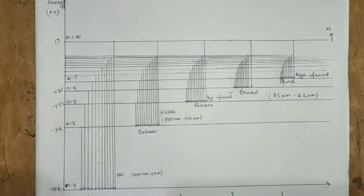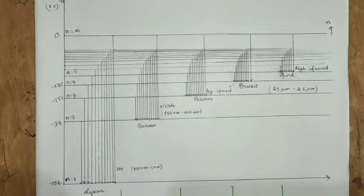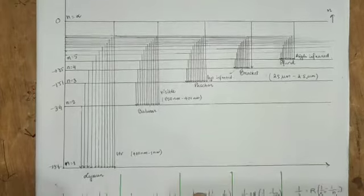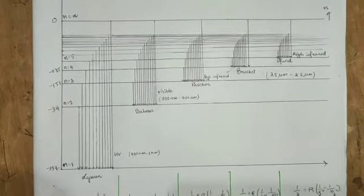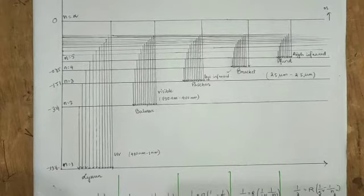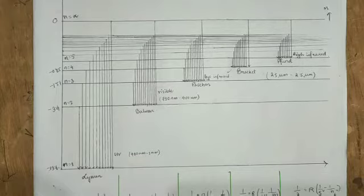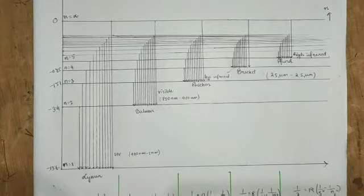When we have a higher level and lower level electron transition, the electron transitions and a photon is released, producing spectra. With electron transitions, we have a spectral series.